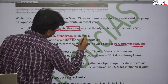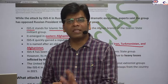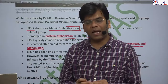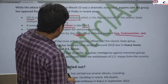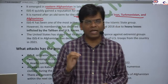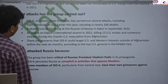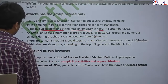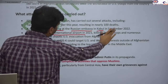ISIS-K emerged in western Afghanistan in late 2014 but became weaker after attacks from both the US and the Taliban. It has enmity with both — ideological differences with the Taliban, and differences with the US. It has continued moderate-level attacks, including a suicide bombing at the Russian embassy in Kabul and an attack on Kabul's international airport.